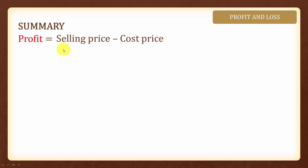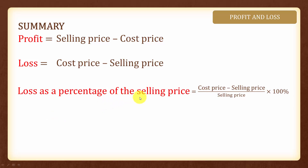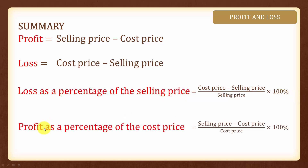In summary, profit is equal to selling price minus cost price, and loss is equal to cost price minus selling price. The loss as a percentage of the selling price is equal to cost price minus selling price, over selling price, times 100%. And that's all for this topic.